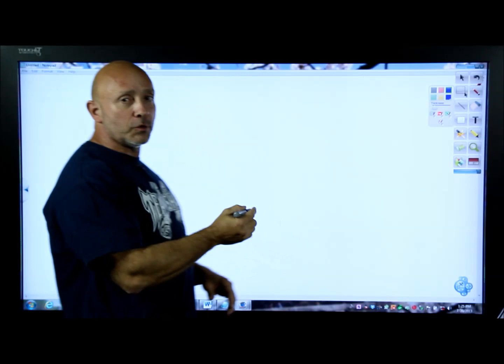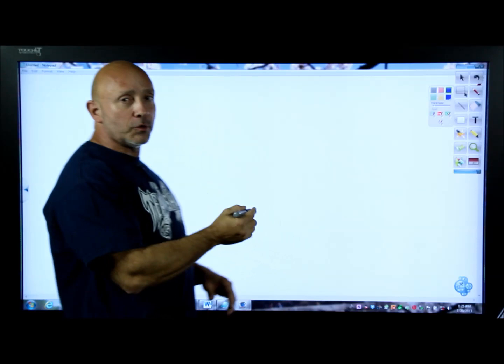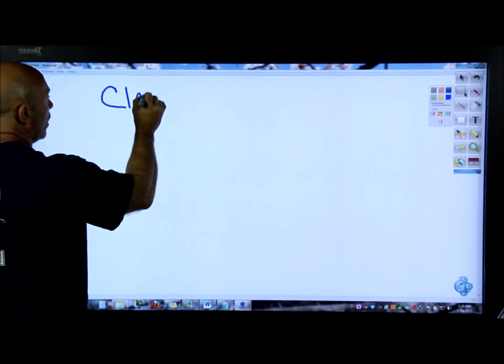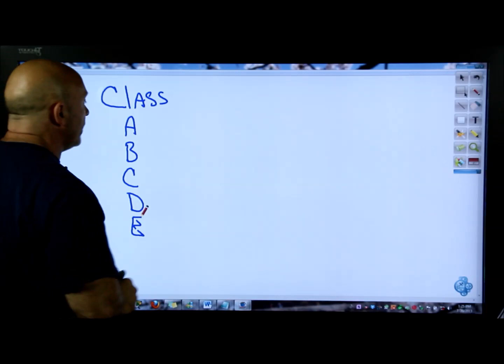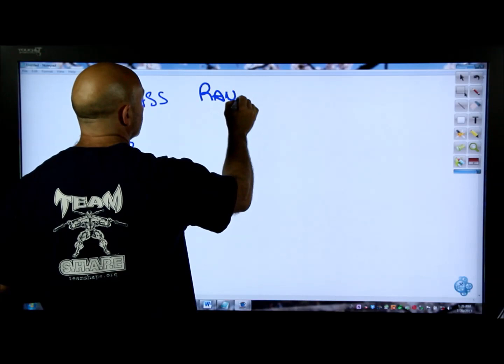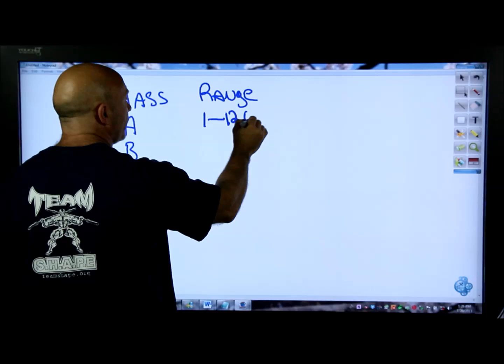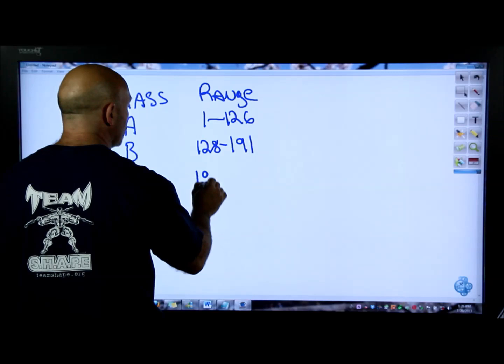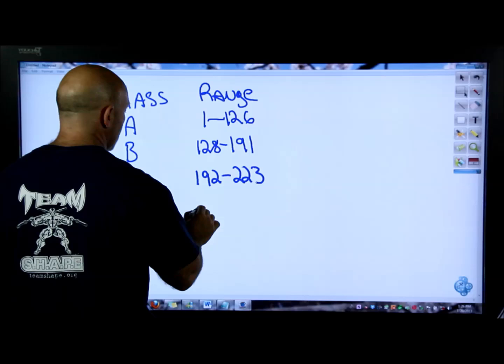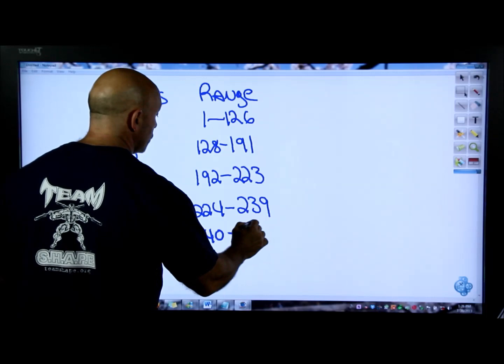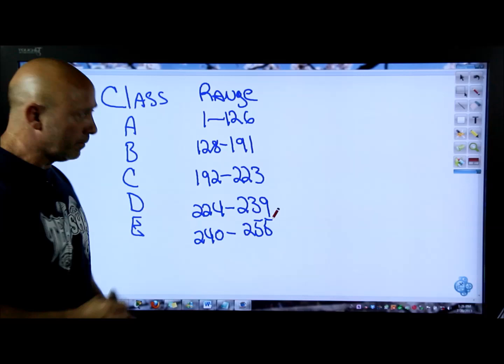The classes are A, B, C, D, and E, and each class has its range. The range for A is 1 to 126. Then we have 128 to 191, which is B. Then 192 to 223 for C, 224 to 239 for D, and 240 to 255 for E. Let's talk about these ranges.